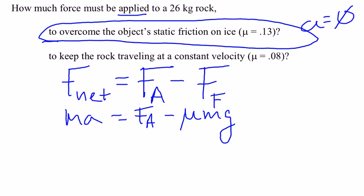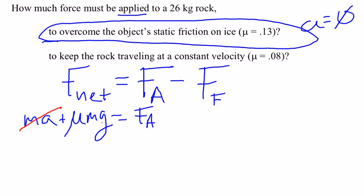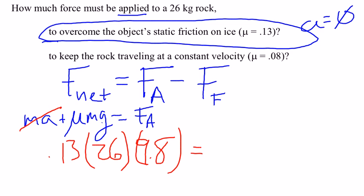All right, we do our algebra and add μmg to both sides. Now, we just said the acceleration is zero, so that is gone anyway. So we have zero there, but μ will be 0.13 times its mass, which is 26, times 9.8. Plug and chug, and you will get your answer.